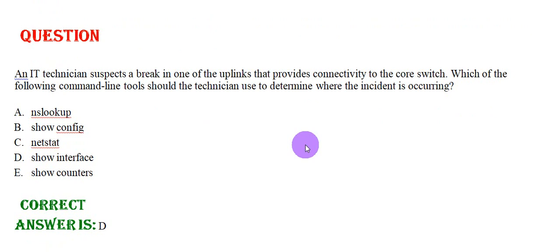An IT technician suspects a break in one of the uplinks that provides connectivity to the core switch. Which of the following command line tools should the technician use to determine where the incident is occurring? Option A: NSLOOKUP. Option B: Show Configuration. Option C: NETSTAT. Option D: Show Interface. Option E: Show Counter. The correct answer is Option D.